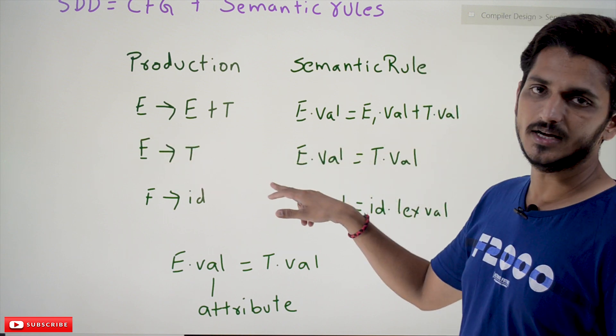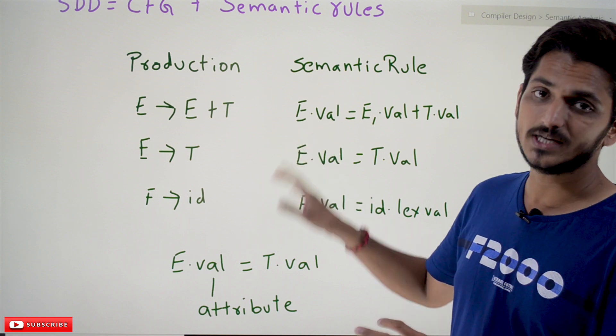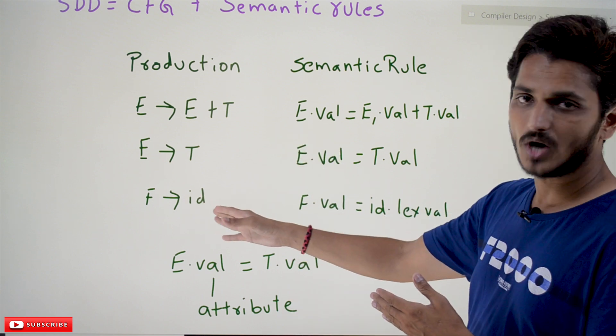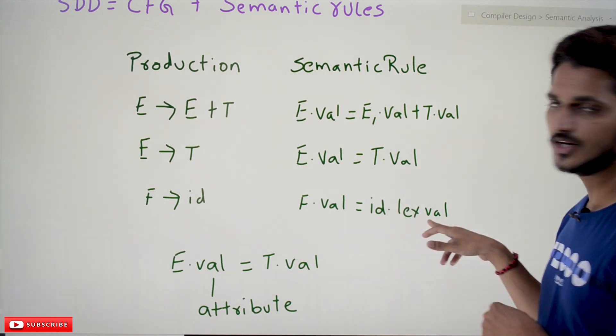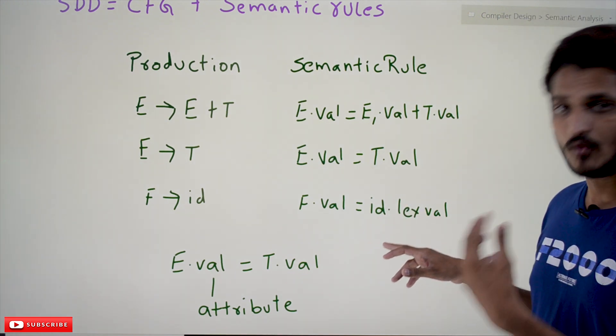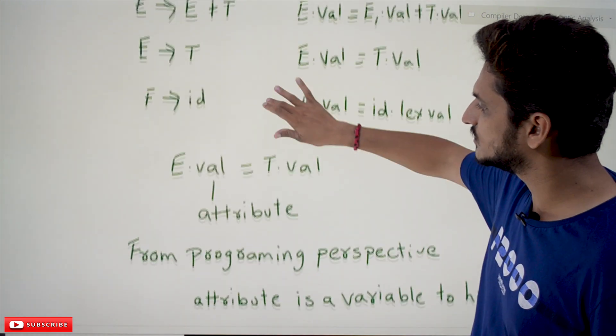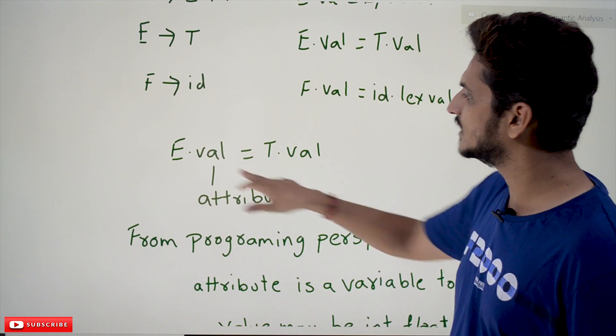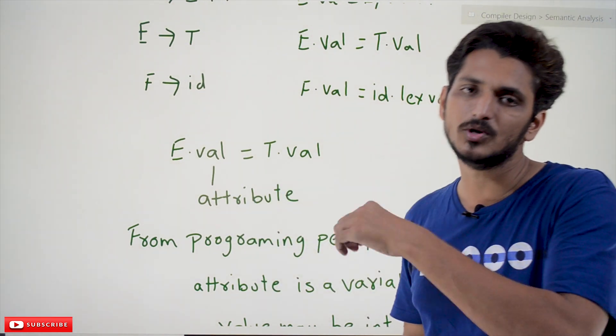This is what we call syntax directed definition. F tends to id, F.val equals id.lexval. One more point you have to understand: this E.val equals T.val, this val we call as attribute.